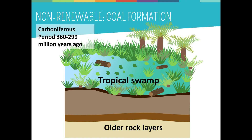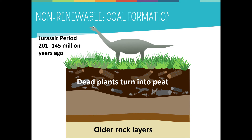Most of the coal we have on earth today was formed during a time called the Carboniferous period, about 360 million years ago — before the dinosaurs — when much of the earth was covered in tropical swamps. As the plants died, their remains sank to the bottom of these swampy areas, making layers and layers of squashed plant material. This eventually turned into a brown spongy material called peat.